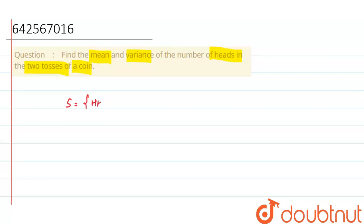So, sample space will be HH, HT, TH or TT.